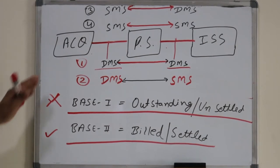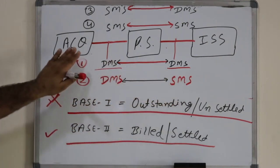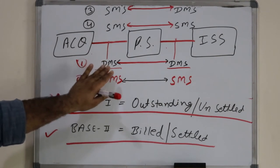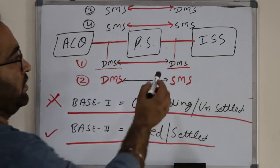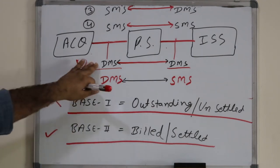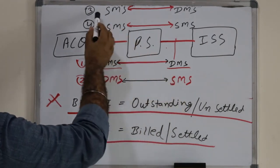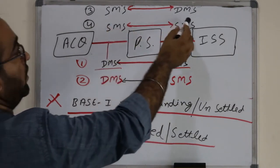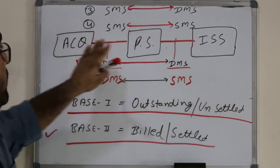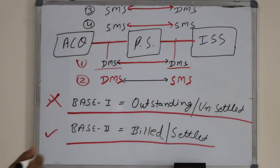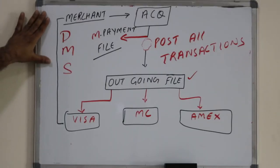There are four different scenarios possible between acquiring and issuing banks. Scenario 1: both acquiring-to-scheme and scheme-to-issuing use DMS. Scenario 2: acquiring-to-scheme uses DMS, but scheme-to-issuing uses SMS. Scenario 3: acquiring-to-scheme uses SMS, but scheme-to-issuing uses DMS. Scenario 4: both sides use SMS. For now, we will focus on Scenario 1 — DMS between acquiring bank and payment scheme.